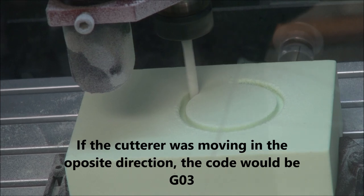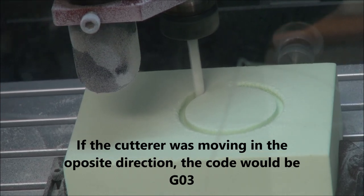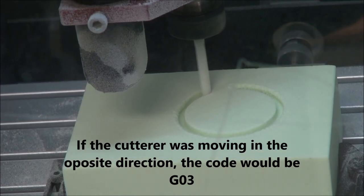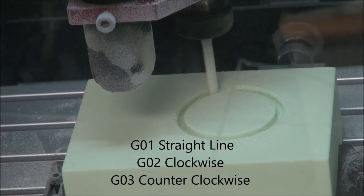And if you want the cut to go in opposite direction, you use the G03 code. But this is the G02 code which is clockwise cuts.